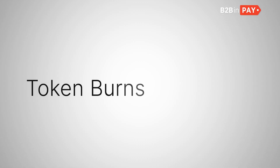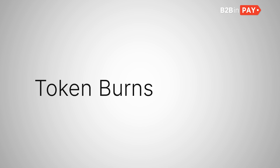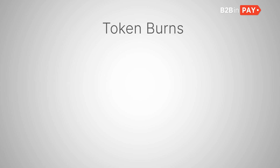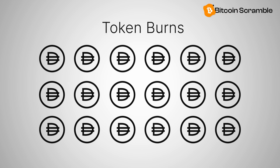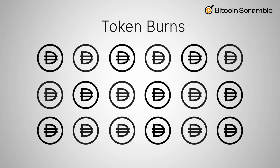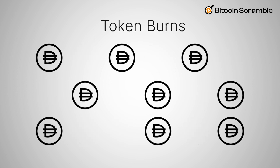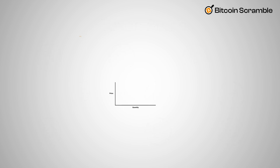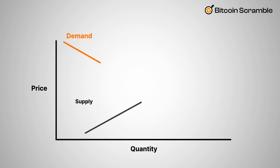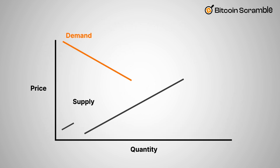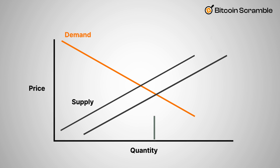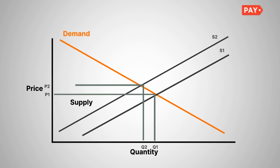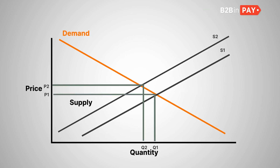Number 2: Token Burns. Some protocols burn blockchain tokens to reduce the number of coins in circulation. According to the laws of supply and demand, reducing the supply of a token should help support its price as the remaining tokens in circulation become increasingly scarce.